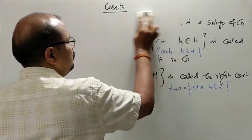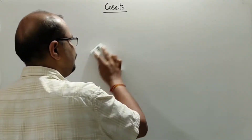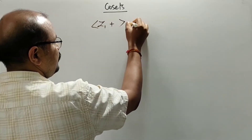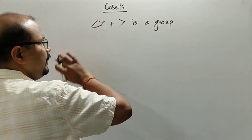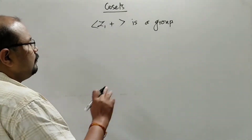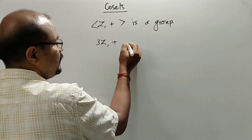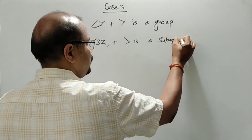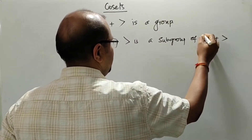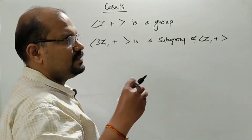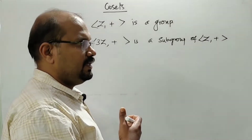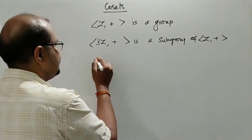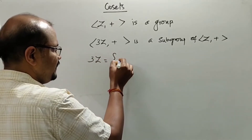Example: Suppose Z(+), the set of all integers under the operation of addition, is a group. The subgroup is 3Z under addition, which is a subgroup of Z. 3Z is the set of all multiples of 3: { ..., -6, -3, 0, 3, 6, 9, ... }.